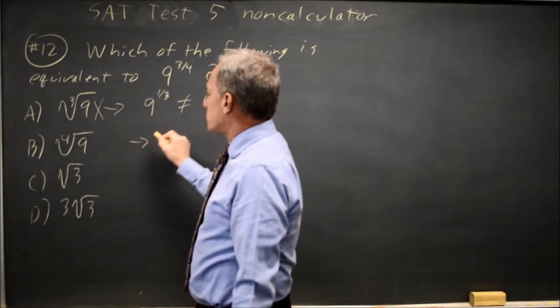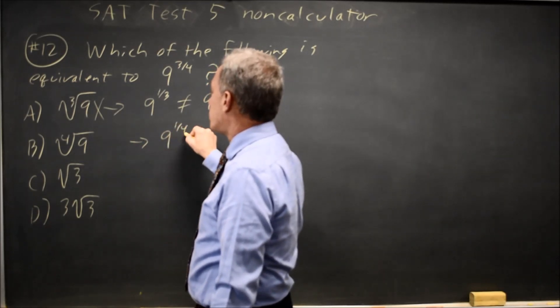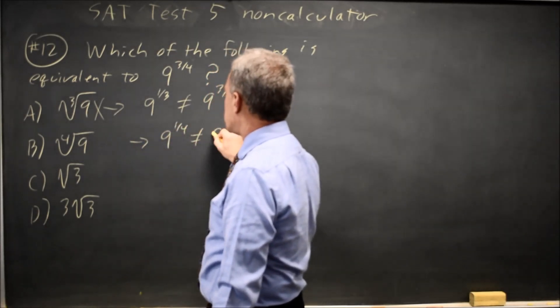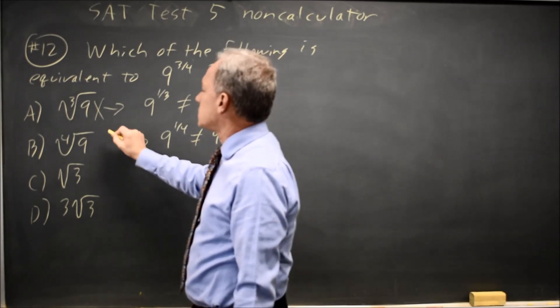Choice B, a fourth root is a one-fourth power. Nine to the one-fourth is not equal to nine to the three-fourths, so that one is wrong.